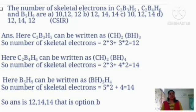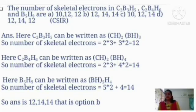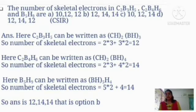The next question is a CSIR competitive exam question from December 2016: the number of skeletal electrons in C₂B₃H₅, C₂B₄H₆, and B₅H₉ are — options: A) 10, 12, 12; B) 12, 14, 14; C) 10, 12, 14; D) 12, 14, 12.